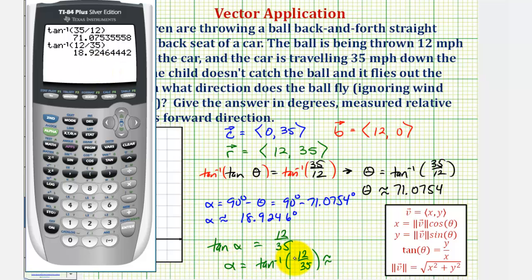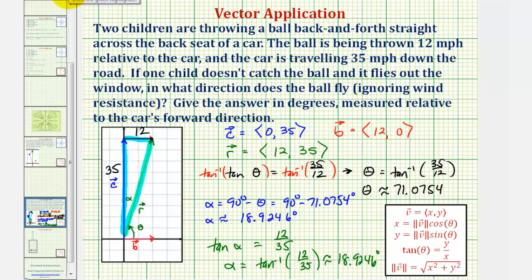But of course this only works because when we find the sum of the two vectors, the result is a right triangle. Whatever method we use, the ball flies out of the car in a direction of approximately 18.9246 degrees relative to the car's forward direction. I hope you found this helpful.